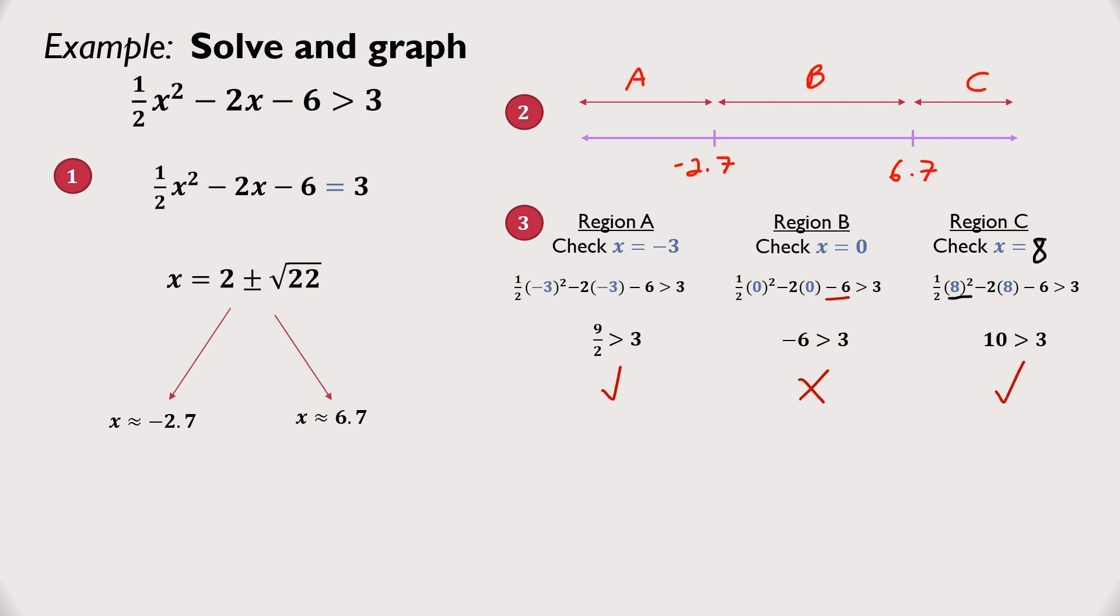Now the only regions that I want in my solution are region A and region C, because region B, the number did not work out. Therefore, my solution is going to look like this: x is less than 2 minus radical 22, and x is greater than 2 plus square root of 22.